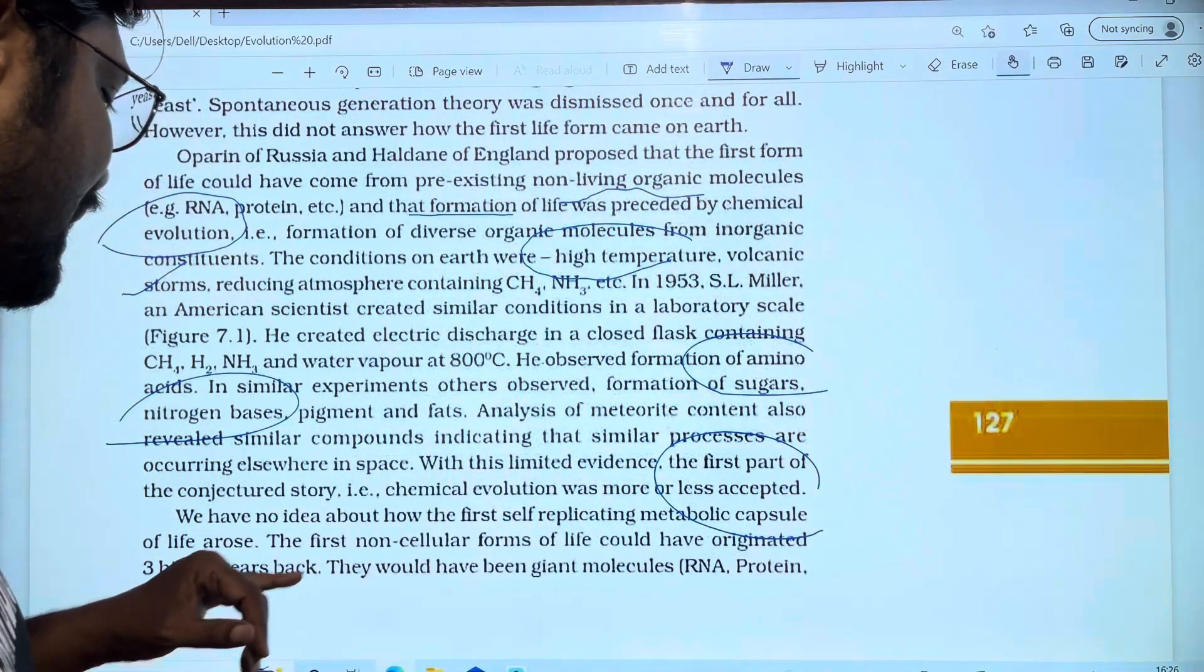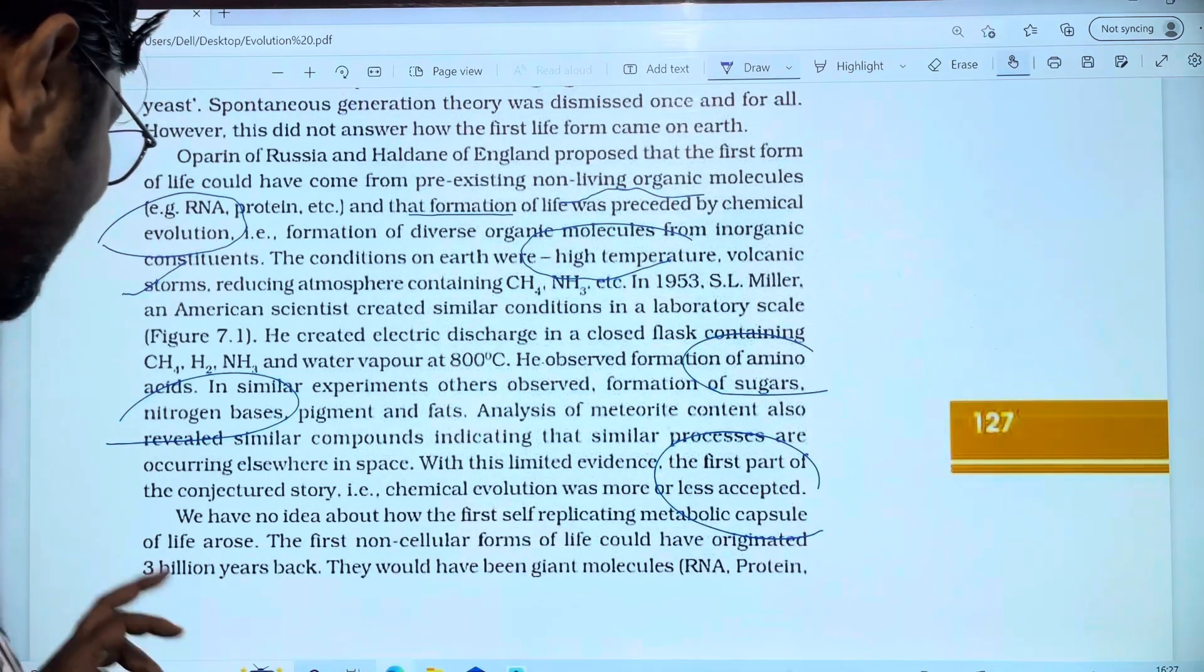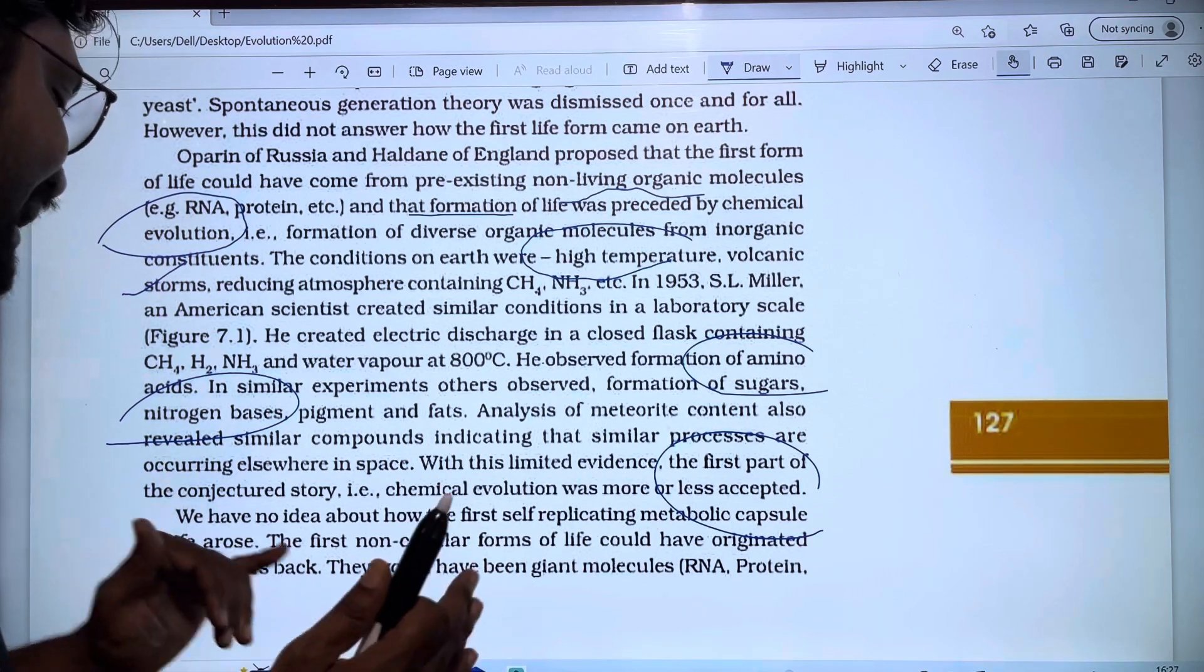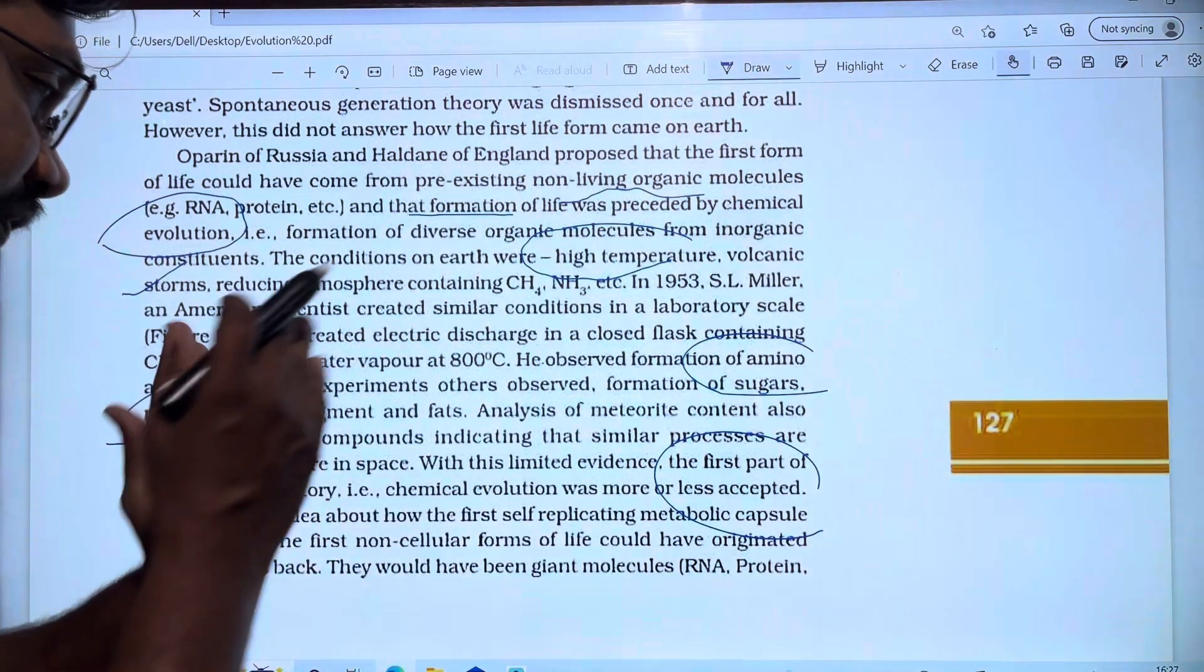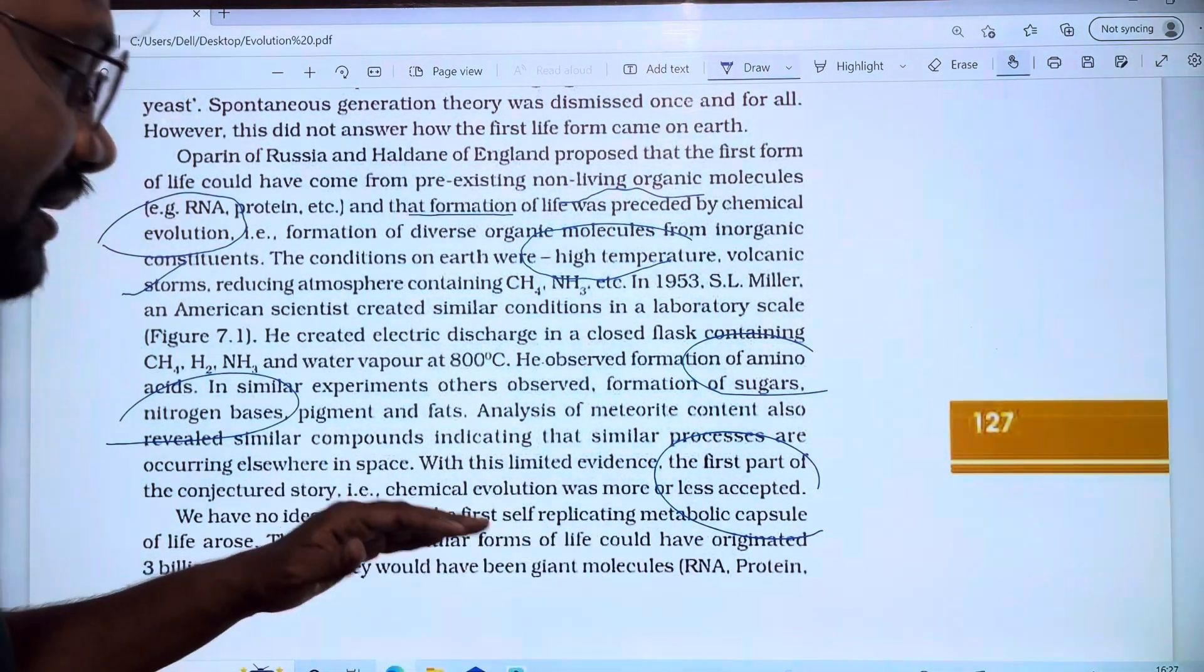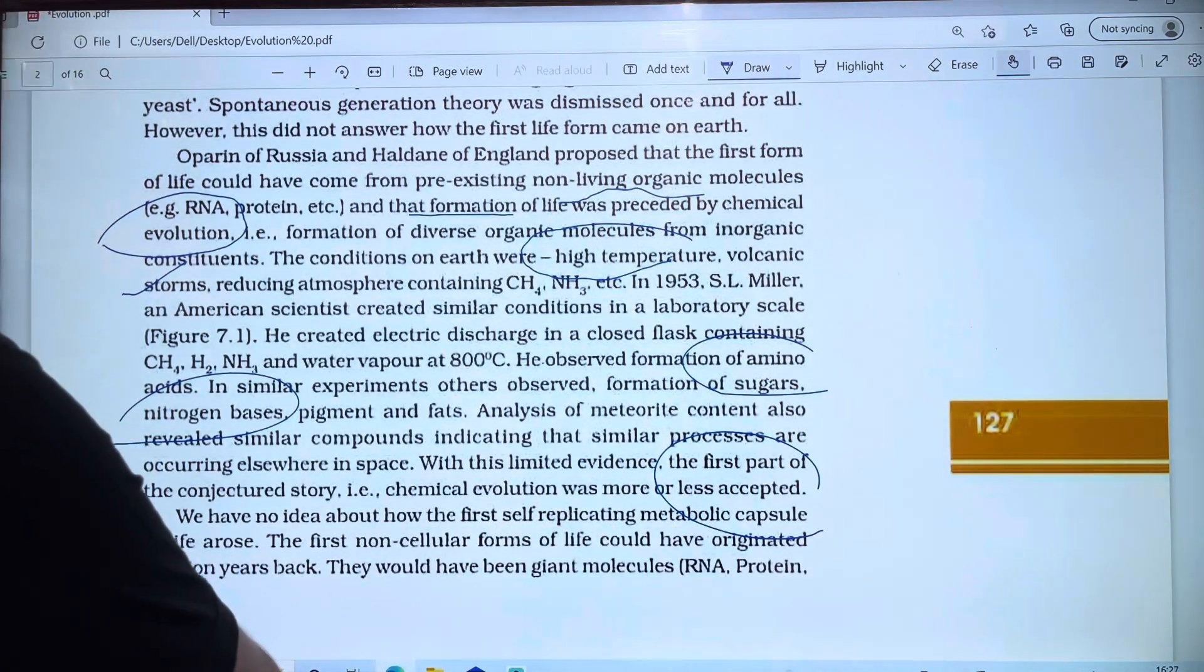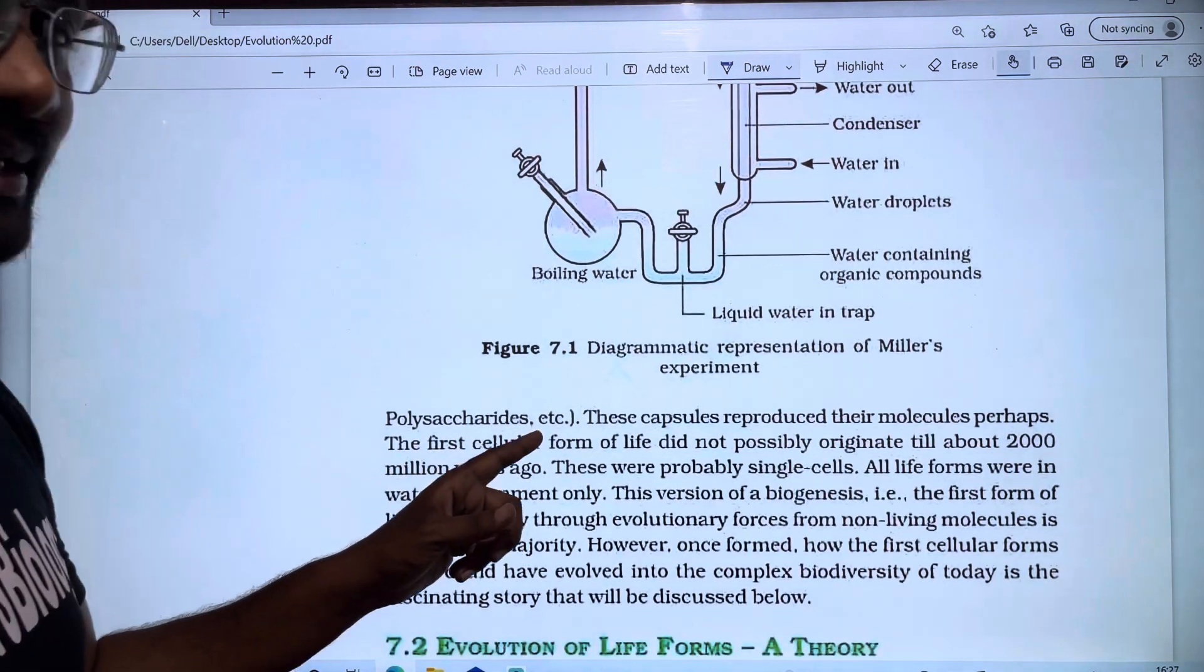However, we have no idea about how the first self-replicating metabolic capsule of life arose. The first non-cellular forms of life could have originated 3 billion years back. They would have been giant molecules like RNA, proteins, and polysaccharides.